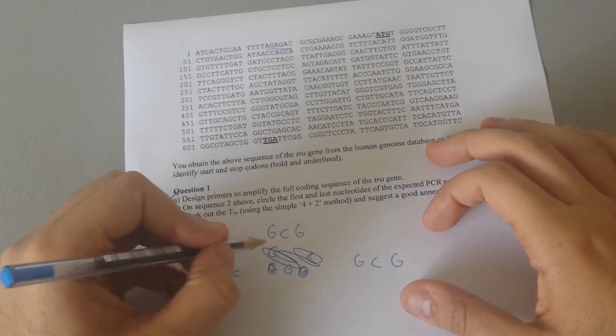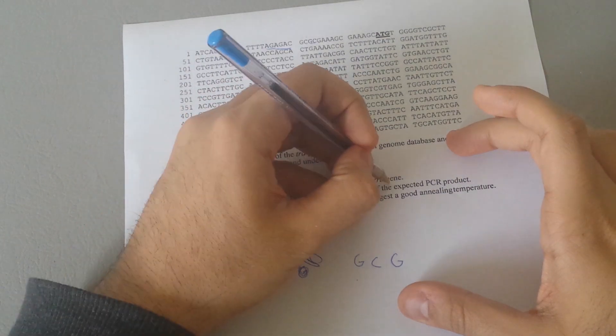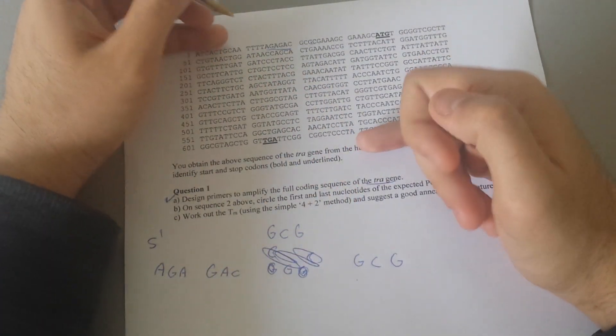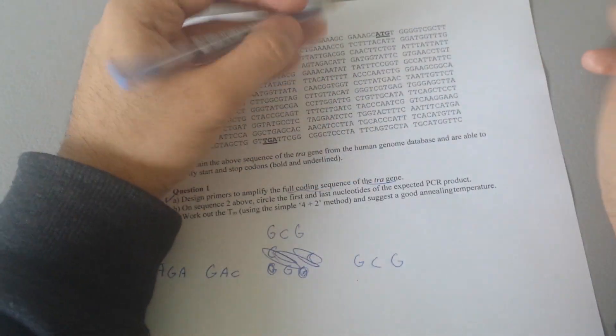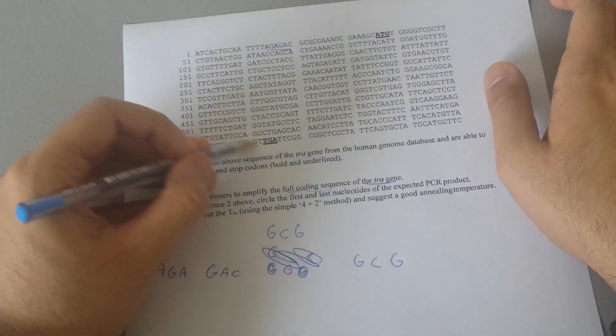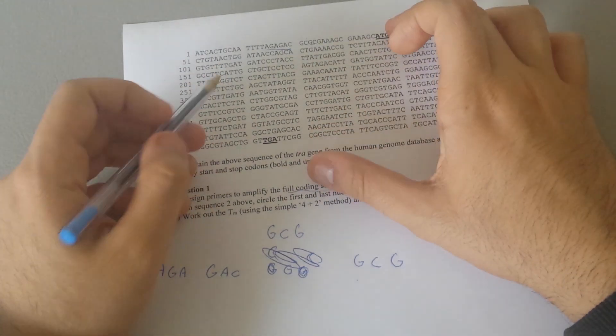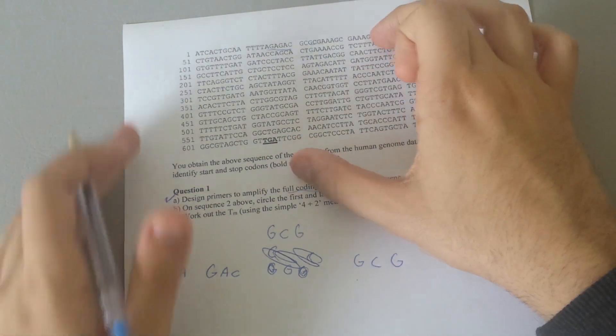Hey guys, in this video I'm going to show you how we can design primers to amplify the full coding sequence of a specific trial gene. This is a trial gene and if it's a full coding sequence it starts from ATG, which is a start codon, to TGA, which is a stop codon. So it is important that a primer must include at least these two important sequences.